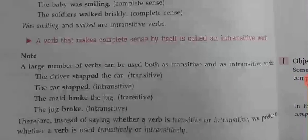Note: a large number of verbs can be used both as transitive and intransitive. For example: 'The driver stopped the car' — transitive; 'The car stopped' — intransitive. 'The maid broke the jug' — transitive; 'The jug broke' — intransitive. The same verb is shown in both uses. Therefore, instead of saying whether a verb is transitive or intransitive, we prefer to say whether a verb is used transitively or intransitively.